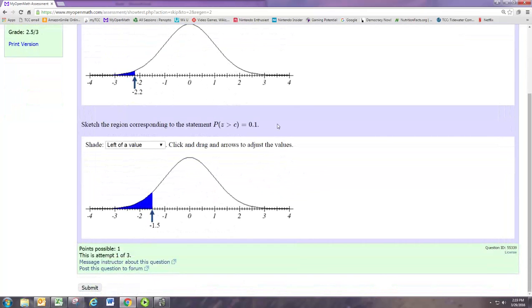For the second part we will need to use technology. We want to sketch a shaded area where the probability or the area is 0.1 for all values of the random variable greater than some number. As we're looking at z being greater than c, we want to look at the area to the right.